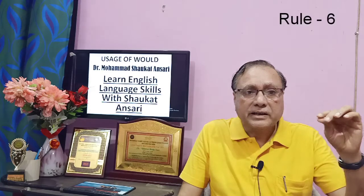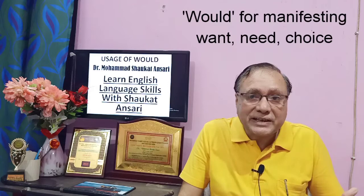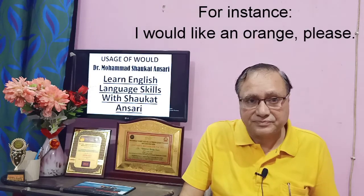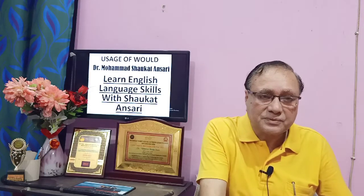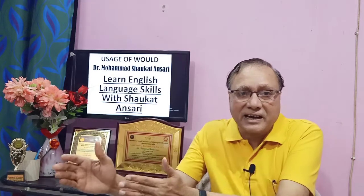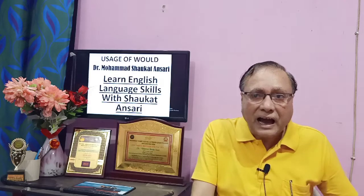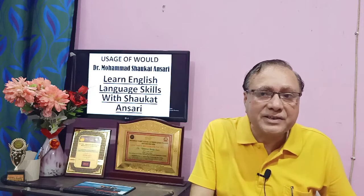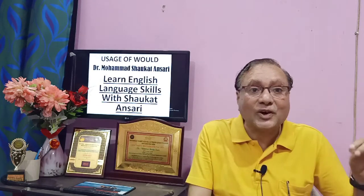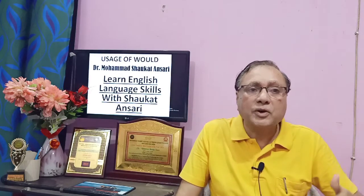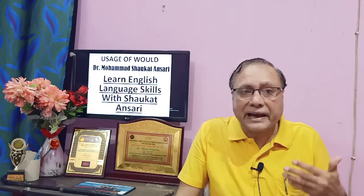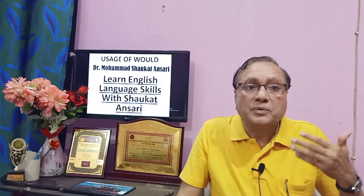Rule Number 6: WOULD is used for expressing want, necessity, or choice using 'I would like.' For example, if there are oranges, mangoes, and apples available, and the speaker says 'I would like an orange, please,' it indicates their choice. Other examples: 'I would like an orange, please' and 'I would like to drink some water, please.'